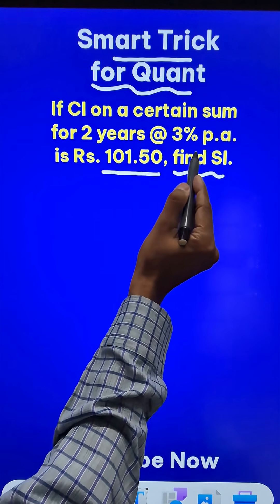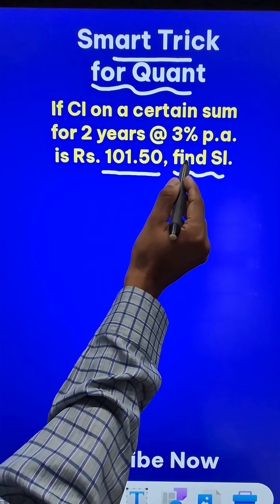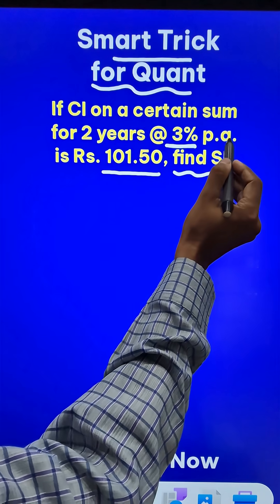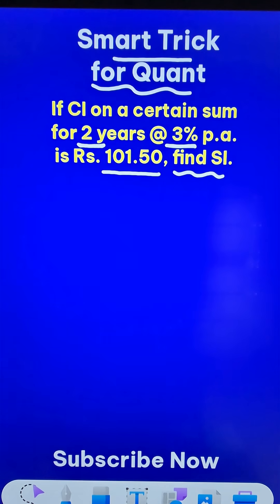So given the compound interest, how to find the simple interest? For this, the rate of interest given is 3% per annum and the time is 2 years.